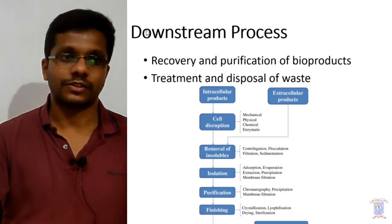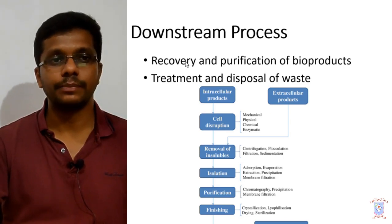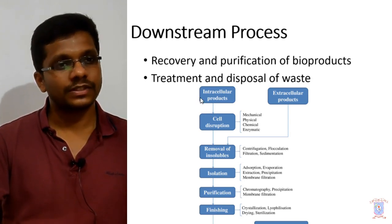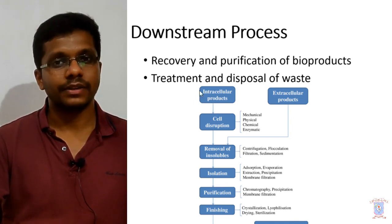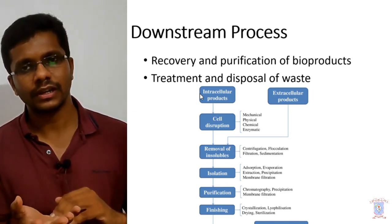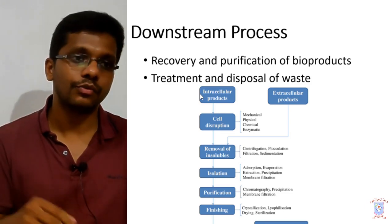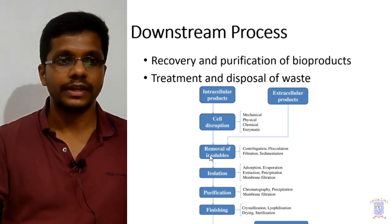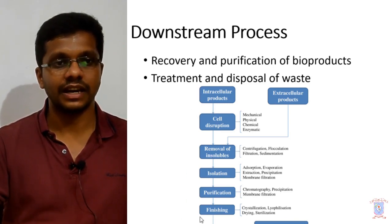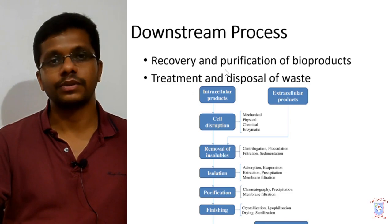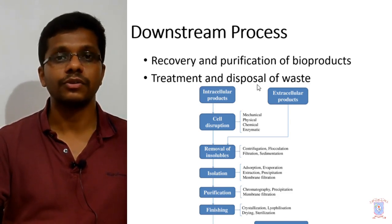Finally we have downstream processing, which involves the recovery and purification of bioproducts. The recovery and purification of the bioproduct is itself a multi-stage process. In most cases the first step is separation of cells and medium, because some products are extracellular and some are intracellular. Then it goes to cell disruption, removal of insolubles, isolation, purification, and finishing to a final product. Downstream processing also involves treatment and disposal of waste.